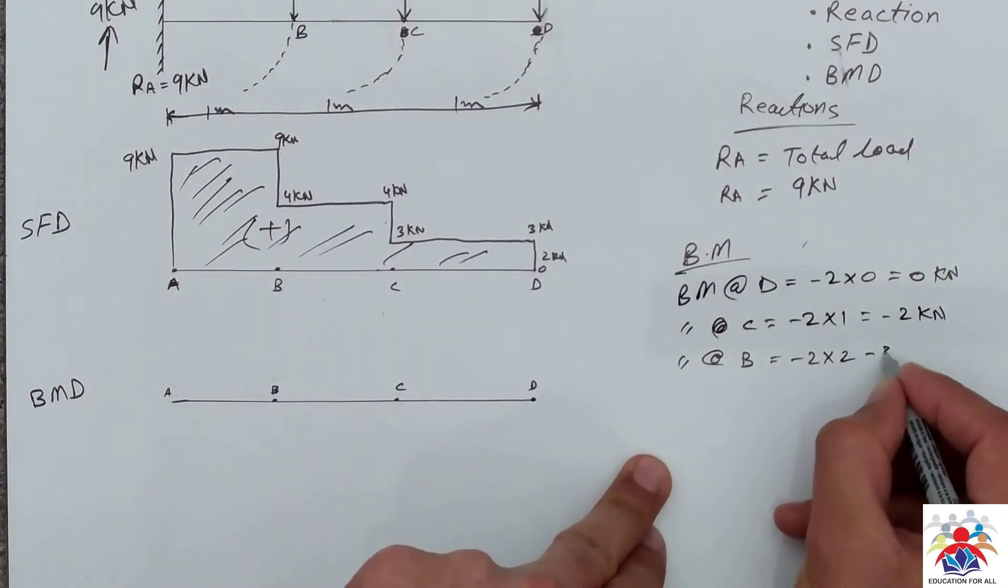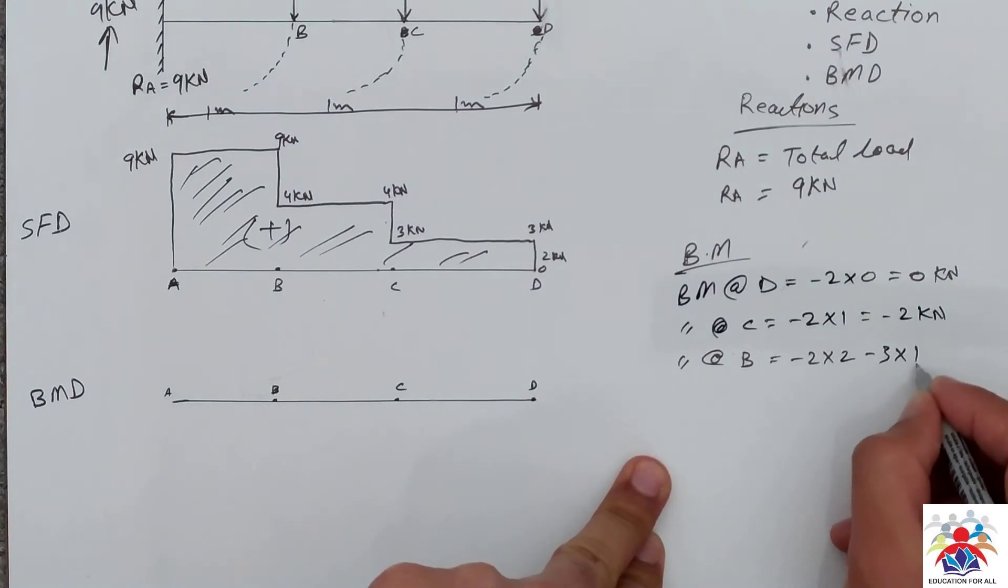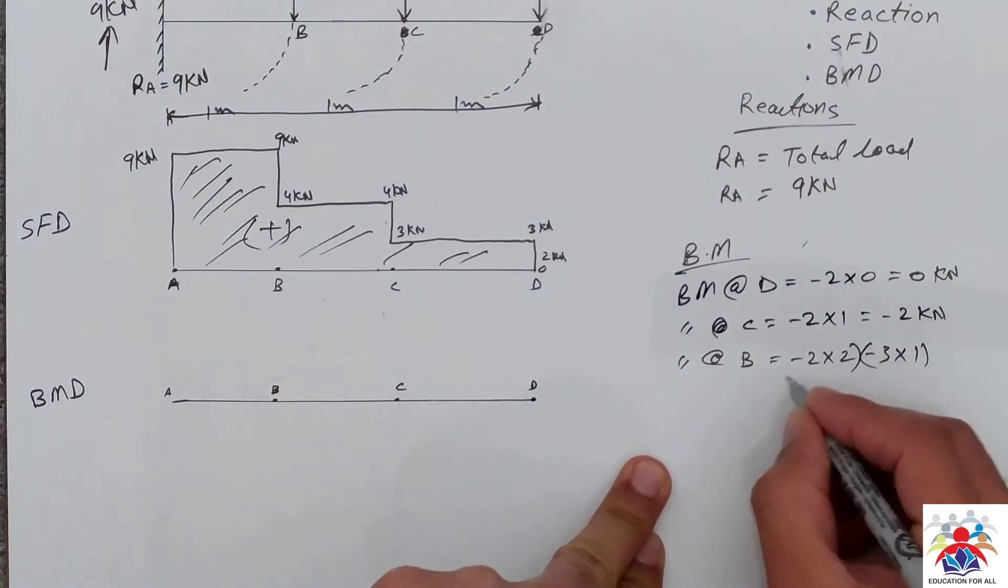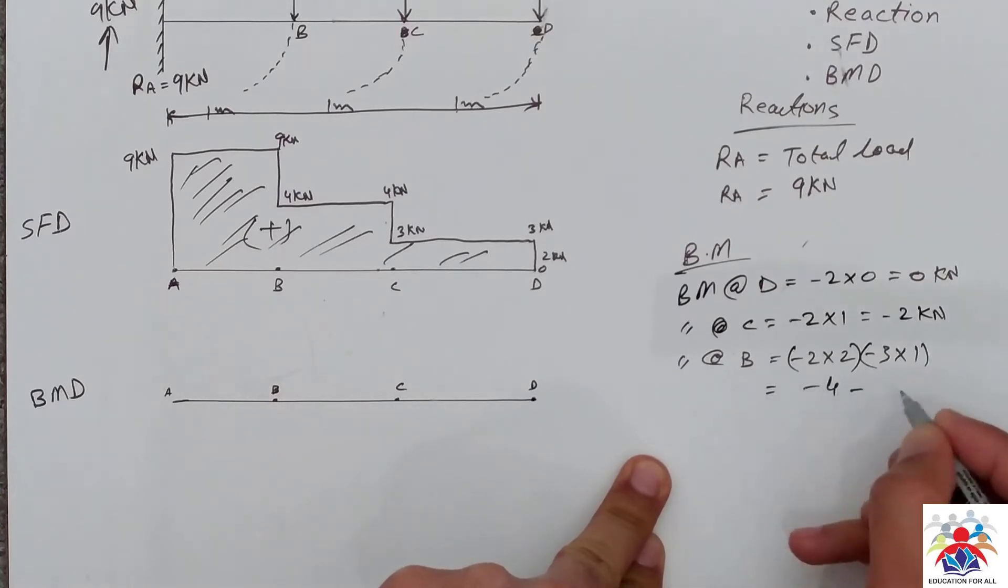Then we have minus 3 multiply by 1. You can put them in a bracket if you want. Minus 4 minus 3 is equal to minus 7. At point B we will have minus 7.